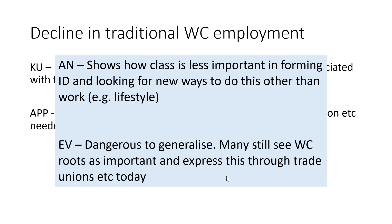This suggests class is possibly less important in forming identity, with lifestyle, place of living, and disposable income becoming more significant. However, it's dangerous to generalize — many working class people still see their roots as important. The Jarrow March still happens annually, and trade union rallies in Durham in the north of England represent strong mining communities. Trade unions are still vitally important to many working class people as part of their historical heritage, so traditional working class identity isn't dying out — it may just be changing.